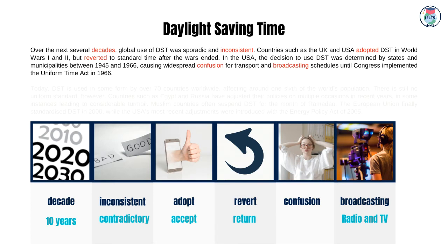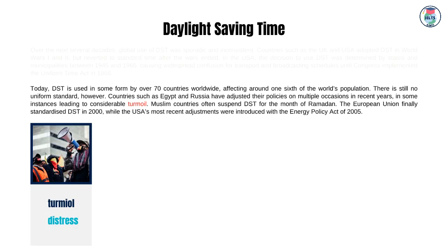Over the next several decades, global use of DST was sporadic and inconsistent. Countries such as the UK and USA adopted DST in World Wars I and II, but reverted to standard time after the wars ended. In the USA, the decision to use DST was determined by states and municipalities between 1945 and 1966, causing widespread confusion for transport and broadcasting schedules until Congress implemented the Uniform Time Act in 1966. Today, DST is used in some form by over 70 countries worldwide, affecting around one-sixth of the world's population. There is still no uniform standard, however. Countries such as Egypt and Russia have adjusted their policies on multiple occasions in recent years, in some instances leading to considerable turmoil. Muslim countries often suspend DST for the month of Ramadan. The European Union finally standardized DST in 2000, while the USA's most recent adjustments were introduced with the Energy Policy Act of 2005.